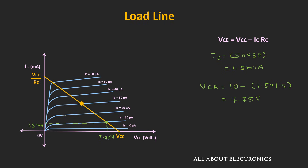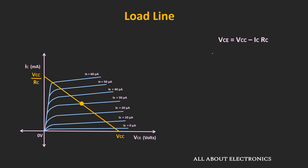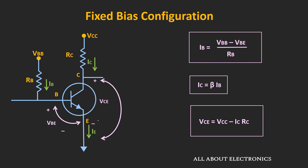Similarly, when β becomes 200, the collector current IC will be equal to 200 times 30μA, that is equal to 6mA. At that time, the value of VCE will be equal to 10V minus 1.5kΩ times 6mA, that is equal to 1V. So the operating point would shift to IC equal to 6mA and VCE equal to 1V. This shows the maximum possible change in the operating point due to change in temperature or change in transistor. That means in this fixed bias configuration, even if we set a fixed value of base current, the operating point may still vary due to changes in external parameters. In upcoming videos, we will see other biasing configurations which can provide a relatively stable operating point.